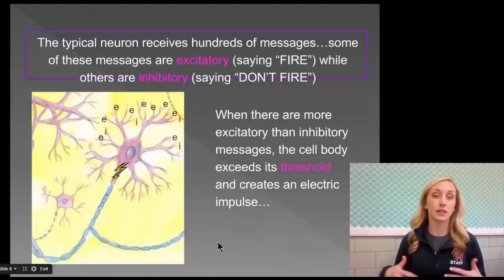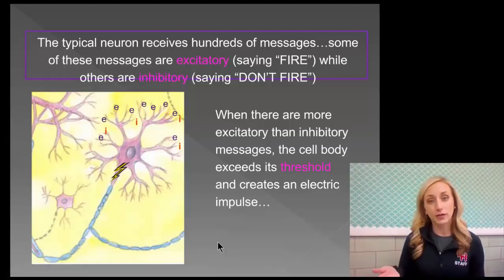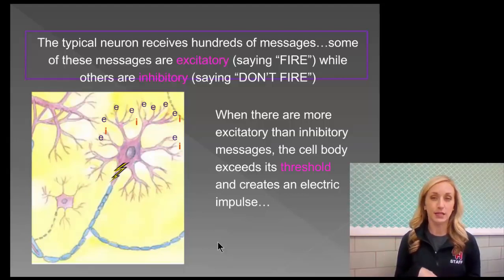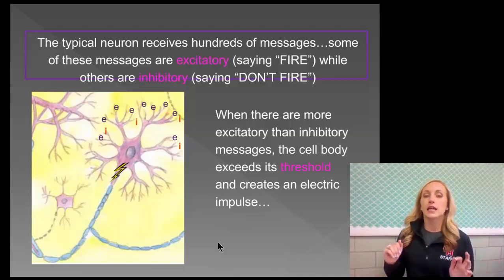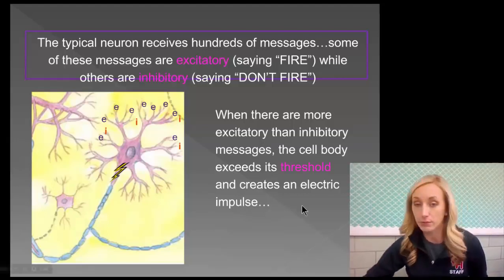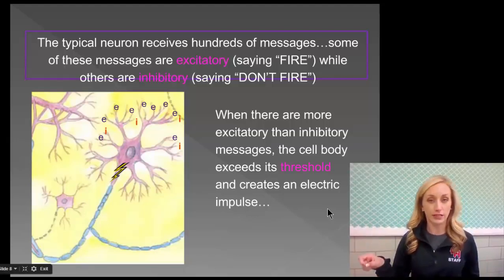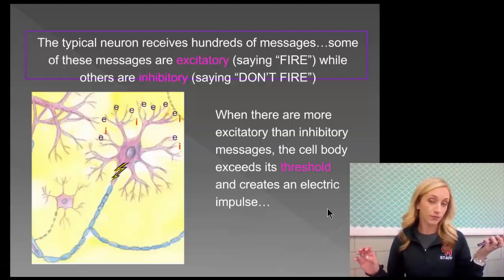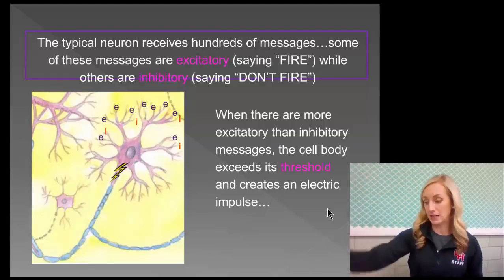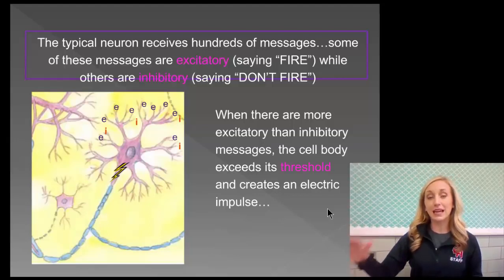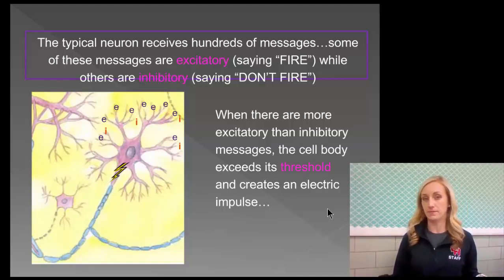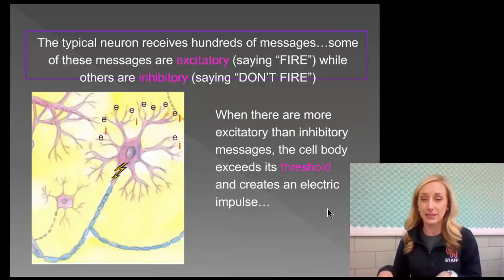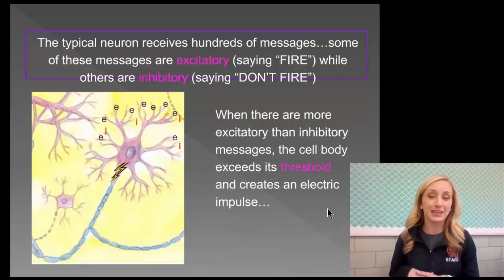A typical neuron receives hundreds of messages. Some are excitatory — they say fire — while others are inhibitory — they say don't fire. We have billions of neurons, and in order to move my right hand to a mouse, it takes a complex network. Excitatory messages go to the neurons needed for that action, while inhibitory messages go to neurons we don't want to fire. When there are more excitatory than inhibitory messages, the cell body exceeds its threshold and creates an electrical impulse.